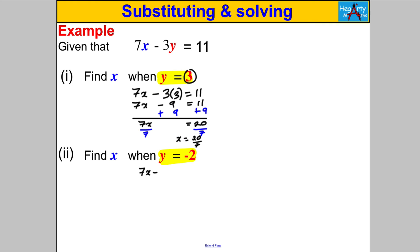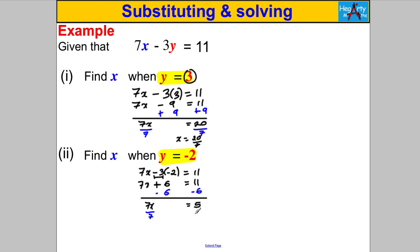And with y = −2: 7x − 3(−2) = 11. Since −3 × −2 = +6, this gives 7x + 6 = 11. Subtract 6: 7x = 5. Divide by 7: x = 5/7. And we're done. This skill is going to be crucial in the upcoming work on solving simultaneous equations, so make sure you're super good at it before moving on. That's it for now — thanks for watching.